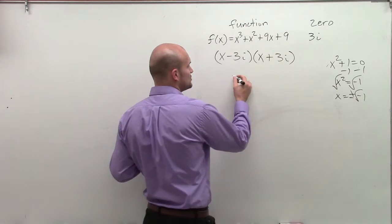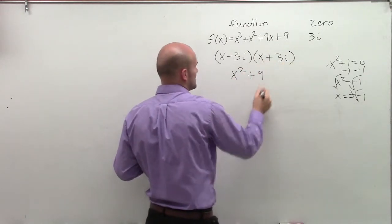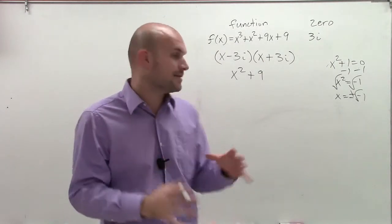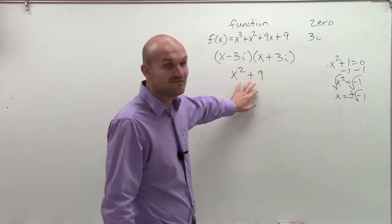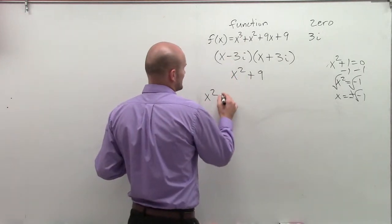Now, I do have a difference of two squares. So I'm going to have x squared minus 9 times i squared. It's going to be x squared plus 9. So therefore, now what I want to do is I'm going to take those two factors, and I'm going to divide this factor, x squared plus 9, into my polynomial. So I'm going to do that by long division.